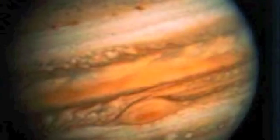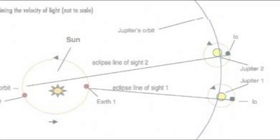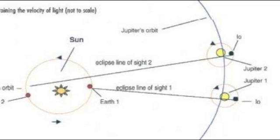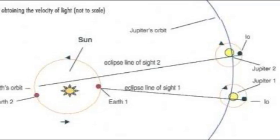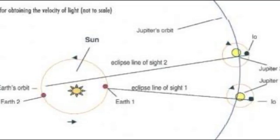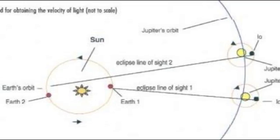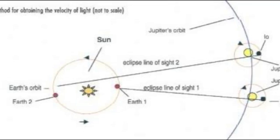Knowing that light has a finite speed, Romer set out to measure exactly what that speed is. Romer began by determining two points during the year, six months apart, as points in Earth's orbit when Earth is the farthest and closest it can be in relation to Jupiter. He found that when Earth was closest to Jupiter, Io eclipsed 11 minutes early. Similarly, he found that Io eclipsed 11 minutes later than predicted when Earth was farthest away from Jupiter.